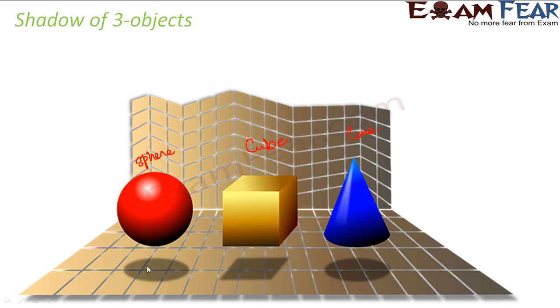But when you look at their shadows, what are they like? The shadow of a sphere is a circle here. The shadow of the cube is a square. The shadow of the cone again is a circle.